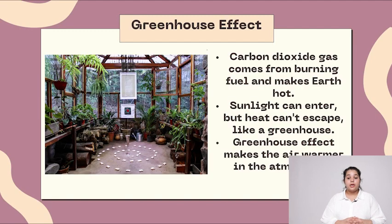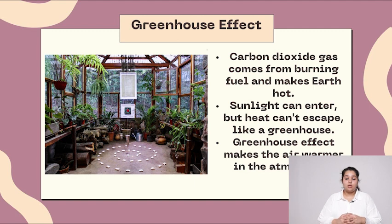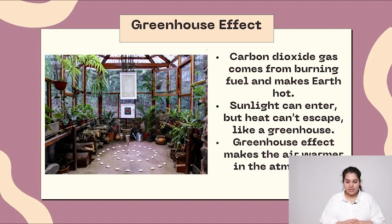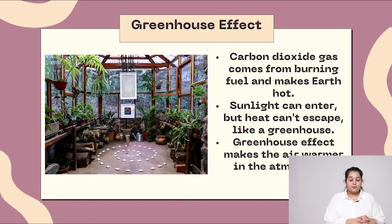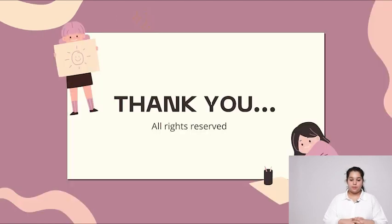Greenhouse effect. Carbon dioxide gas comes from burning fuel and makes the earth hot. Sunlight can enter but heat cannot escape, like a greenhouse. The greenhouse effect makes the air warmer in the atmosphere.